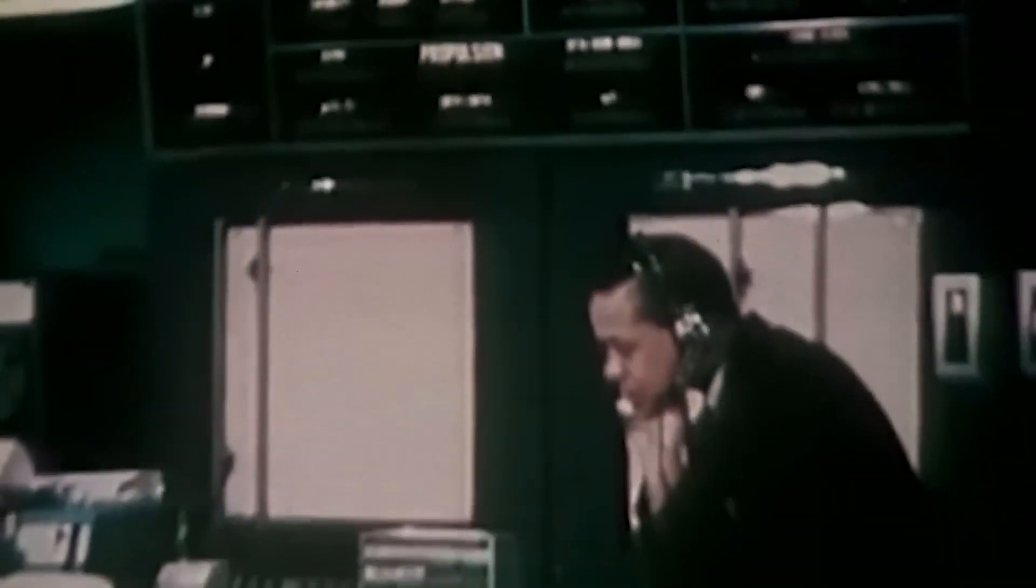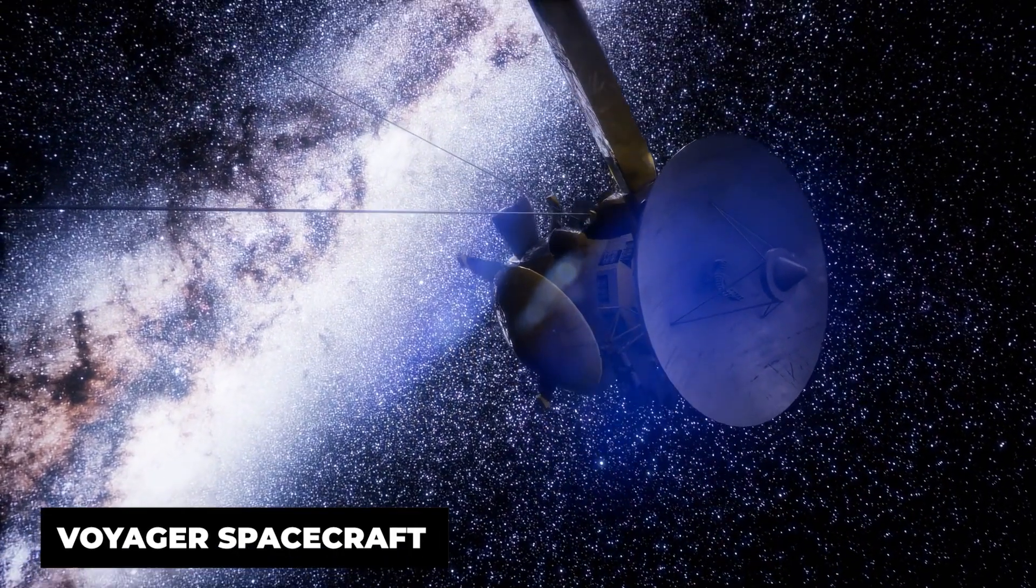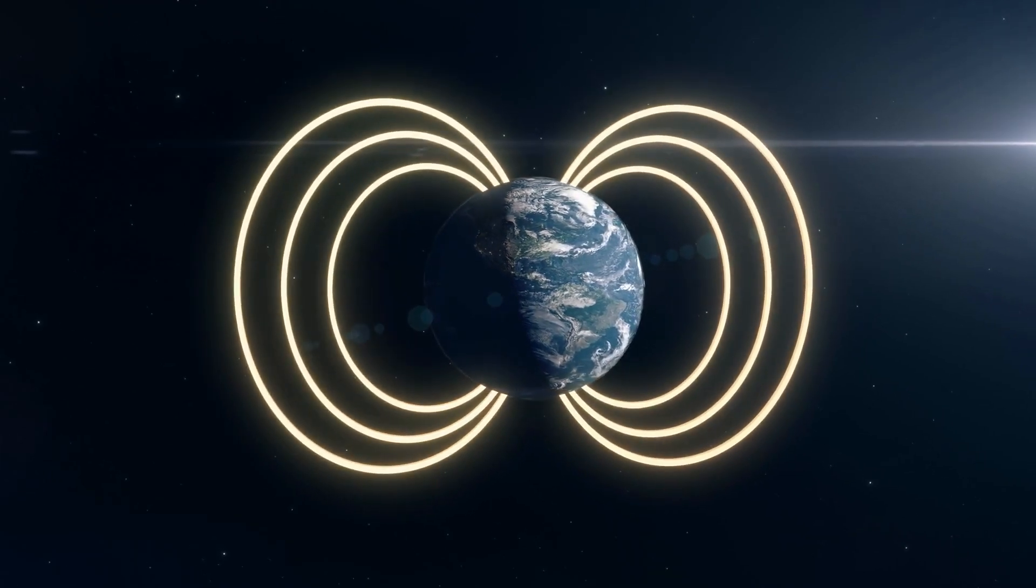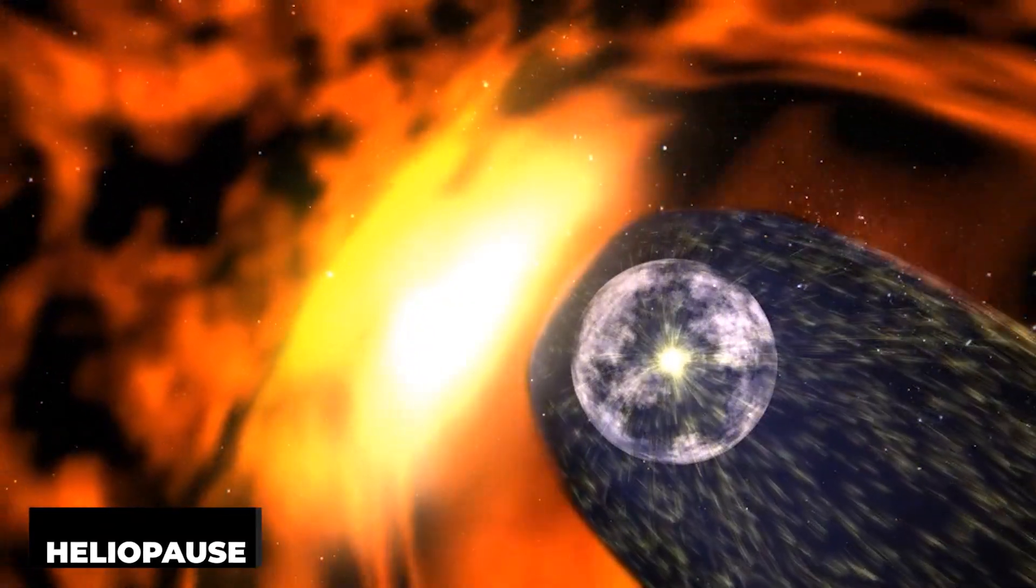You would not believe what was revealed by the farthest traveling man-made object in history. The surprising discovery made by the Voyager spacecraft is that there were no significant changes in the magnetic field as both spacecraft crossed the heliopause and entered interstellar space.